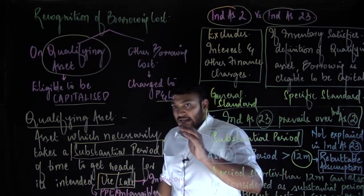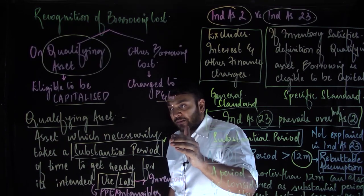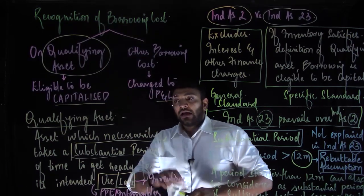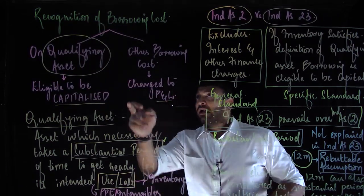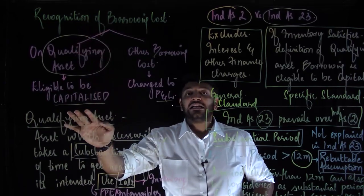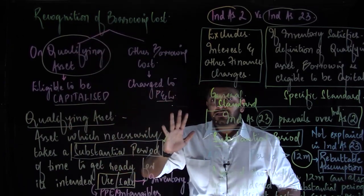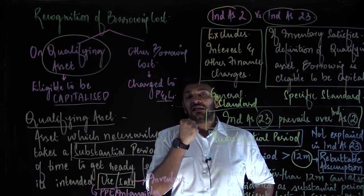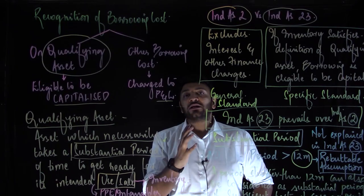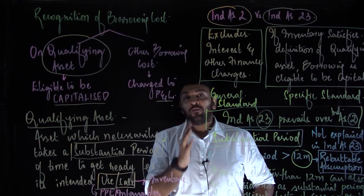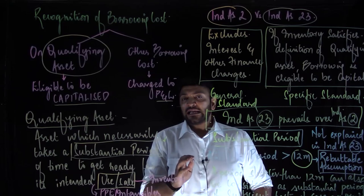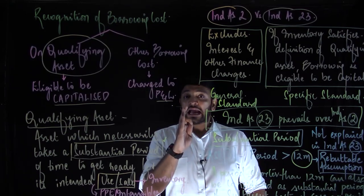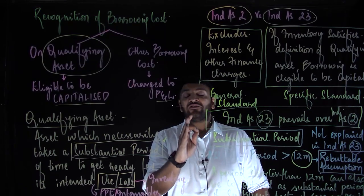An asset which necessarily takes a substantial period to get ready for its use or sale is called a qualifying asset. If I have a qualifying asset, the borrowing cost attributed to it is eligible to be capitalized. This is the crux of Ind AS 23 — capitalization of borrowing cost on a qualifying asset.